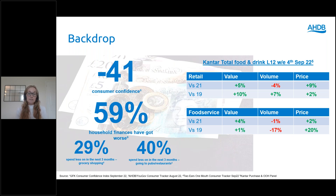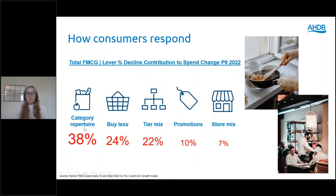This results in 59% of consumers claiming to be worse off financially, impacting what people are buying, with 29% claiming to be spending less on grocery and 40% less at pubs and restaurants. We can see the impact on the retail and food service markets, with value growth in the last 12 weeks to September being purely driven by price, as volumes are suffering massively. If we look at what is driving value down in the retail FMCG market, we see ways consumers are trying to mitigate that price rise.